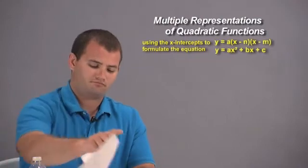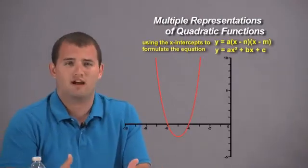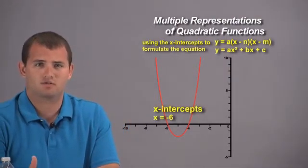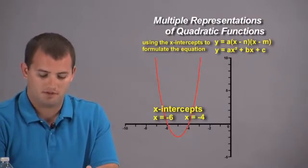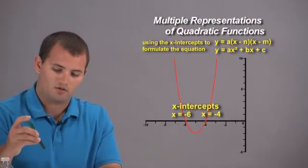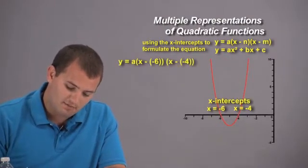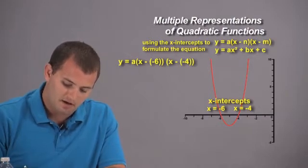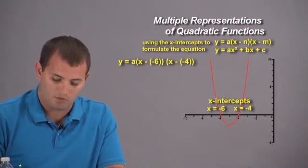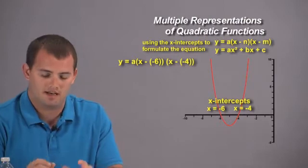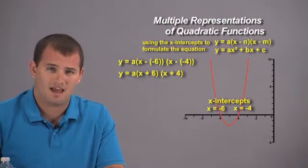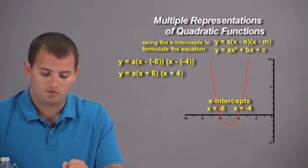Here's our first example. Given this graph, we want to find an equation to model it. The x-intercepts occur at x equals negative 6 and x equals negative 4. These are our n and m values. Inputting those into our equation, we have y equals a times the quantity (x minus negative 6) times the quantity (x minus negative 4). Simplifying by distributing the negative, we get y equals a times (x plus 6) times (x plus 4).